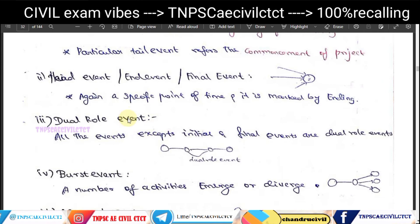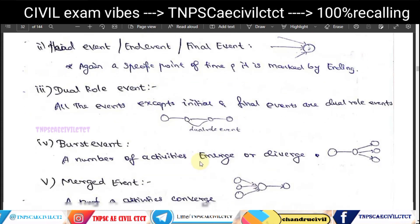The third type is the dual role event. All events except the initial and final events are dual role events. A dual role event acts as both the end of one activity and the start of the next, continuing through the network. The first and last events are not dual role events.